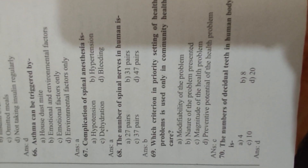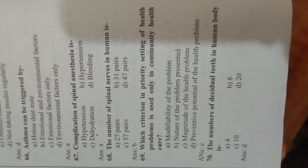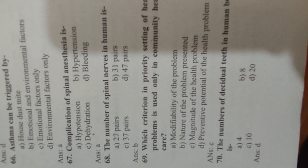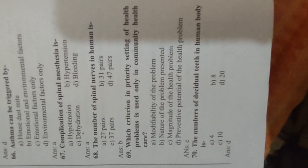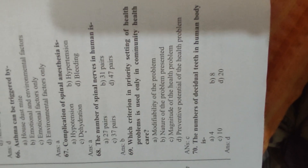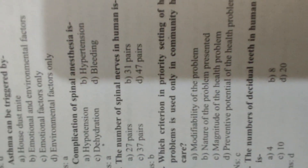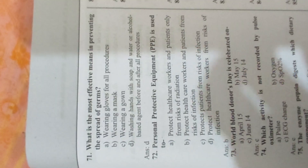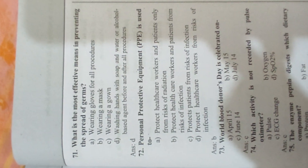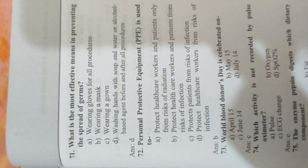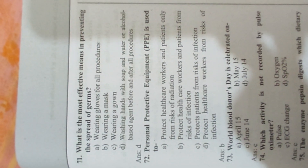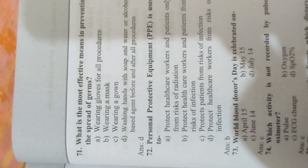Question 69: Which criterion in priority setting of health problems is used only in community health care? Answer D, magnitude of the health problem. Question 70: The number of deciduous teeth in the human body is Answer D, 20. Question 71: What is the most effective means in preventing the spread of germs? Answer D, washing hands with soap and water or alcohol-based agent before and after all procedures.